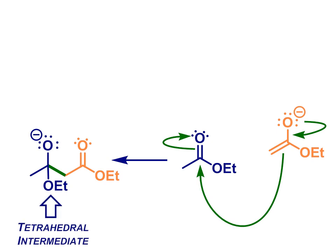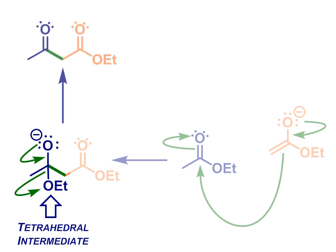Now this tetrahedral intermediate, as they are prone to do, can collapse, expelling ethoxide and reforming that carbonyl group on the left of the molecule.